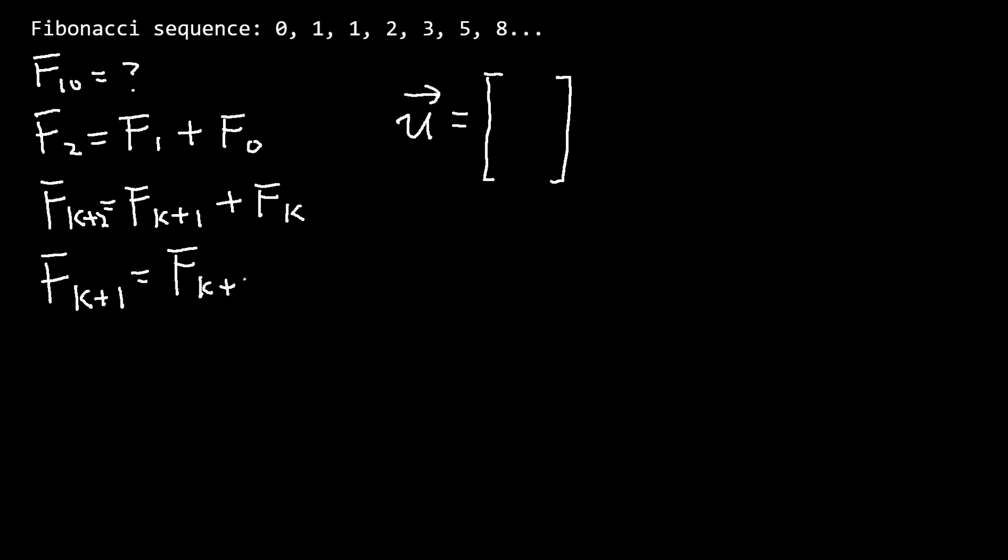The trick is to write one unknown as the second equation. The first value in vector U_k is F_{k+1}, and the second value is F_k. We want the next stage U_{k+1} equal to the dot product between matrix A and U_k.